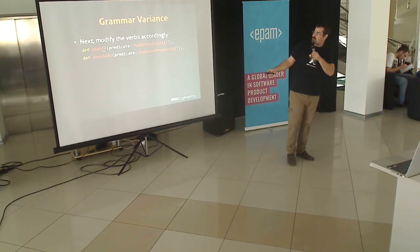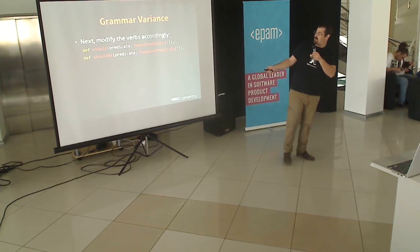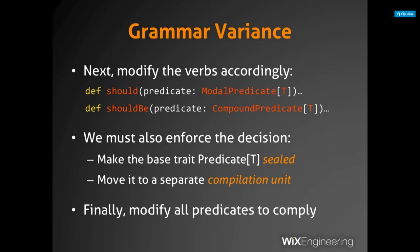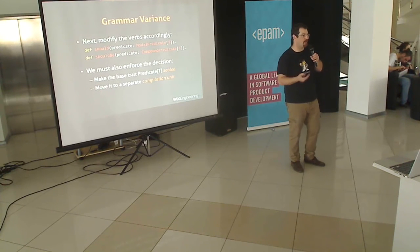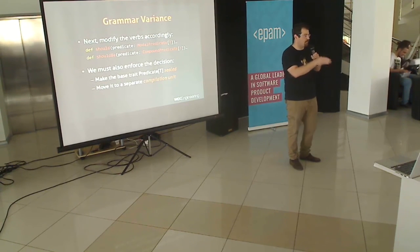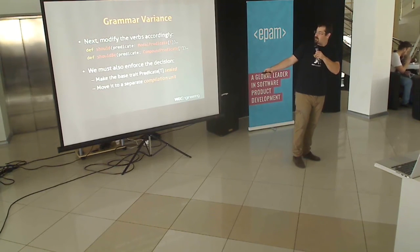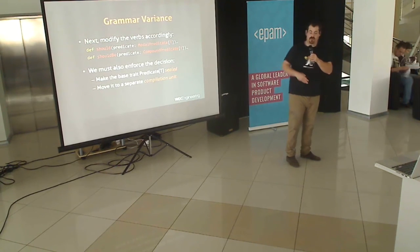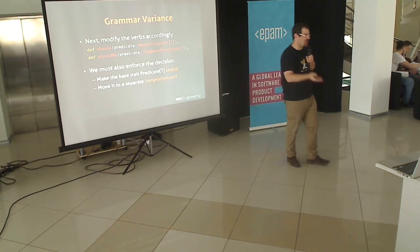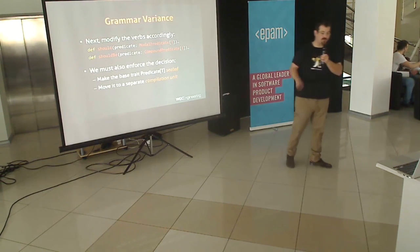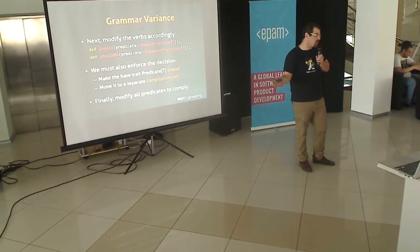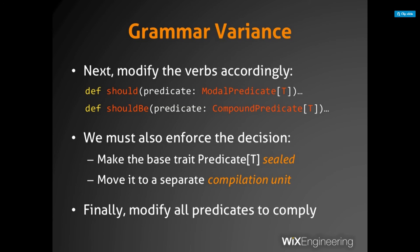We modify our verbs accordingly: 'should' takes in a ModalPredicate, 'shouldBe' takes in a CompoundPredicate. To enforce the decision, we make the base Predicate trait sealed and move it to a separate compilation unit — no one can extend it directly. Nice. Finally, we go through all our different predicates and classify them. Now we have a sensible sentence structure.